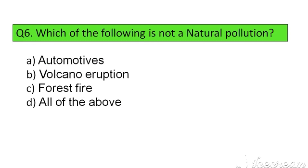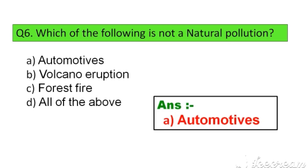Question number 6. Which of the following is not a natural pollution? Option A. Automotives, B. Volcano eruption, C. Forest fire, D. All of the above. The right answer is Option A: Automotives.